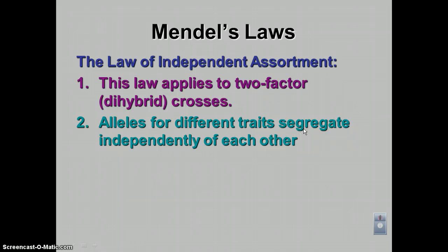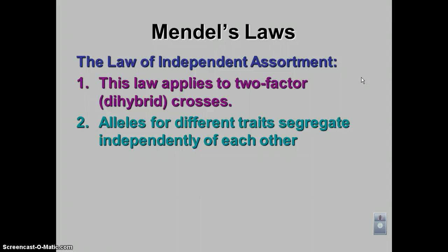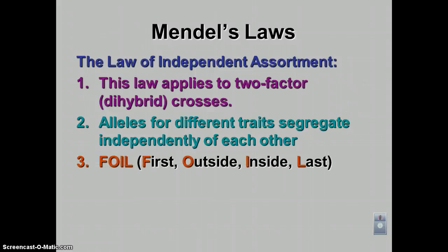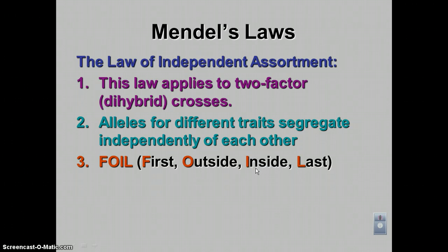Here's your definition: alleles for different traits will segregate independently of each other. In plain English, that means you've got to FOIL it, just like you learned in math class. FOIL is an acronym — you take the first pair, the outside pair, the inside pair, and the last pair. That's just how it works.